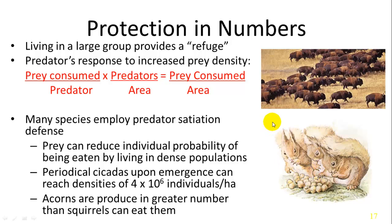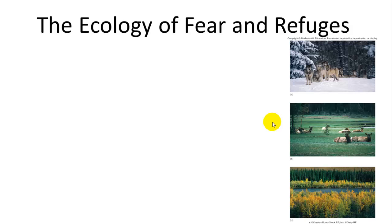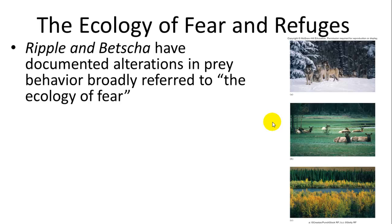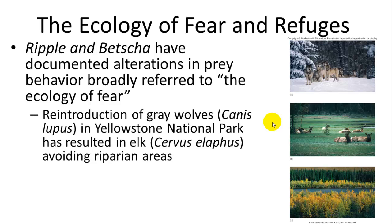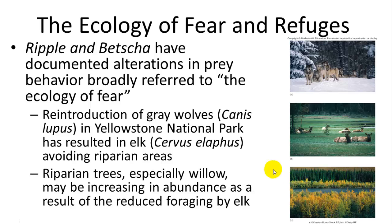Periodical cicadas emerge all at once every few years, oversaturating predators' ability to eat them. Acorns are another example — trees produce a large mast of acorns in the fall, squirrels can't eat enough, and some get cached and survive to grow. Another interesting phenomenon is the ecology of fear. Ripple and Beschta documented that alterations in prey behavior, broadly referred to as the ecology of fear, were exemplified by the reintroduction of gray wolves into Yellowstone, causing elk to avoid open meadows and riparian areas, allowing willows and other trees to grow and stabilize those habitats.